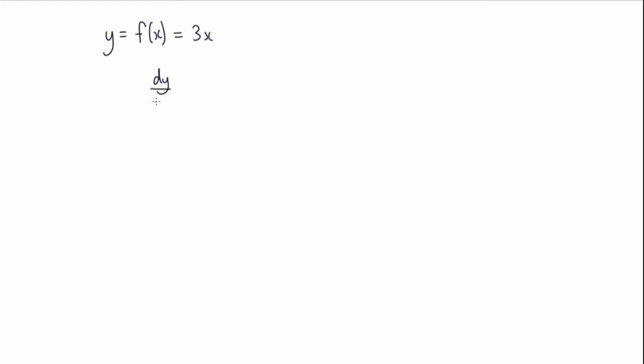So dy by dx is going to be equal to the limit as delta x tends to 0 of the following. So we have the original function, and wherever we see an x, we add delta x. So f of x plus delta x. We then subtract the original function, and we put the whole thing over delta x.